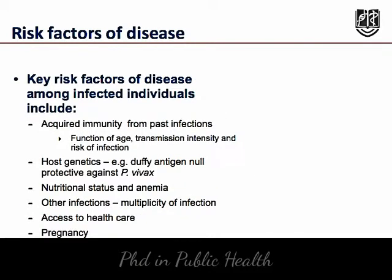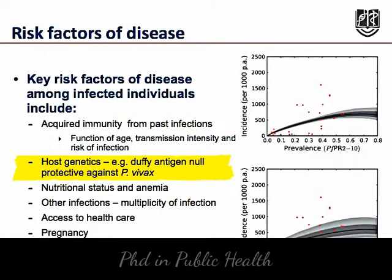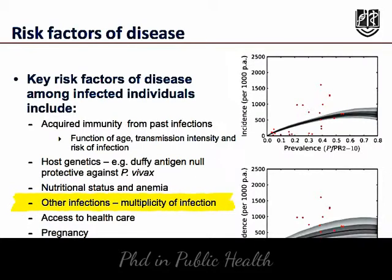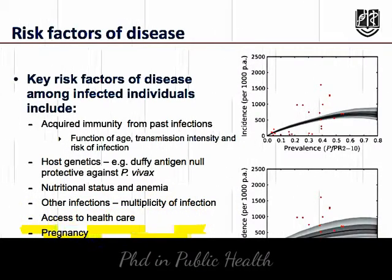Key risk factors of disease among infected individuals include acquired immunity from past infections, which is primarily a function of age, transmission intensity, and the risk of infection. Host genetics such as the Duffy antigen null, which is protective against Plasmodium vivax, nutritional status and anemia, other infections or multiplicity of infection, and access to healthcare. It should be noted that women in their first two pregnancies in areas of stable Plasmodium falciparum transmission are at increased risk of malaria.